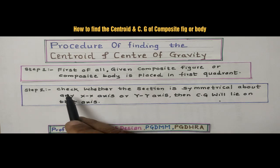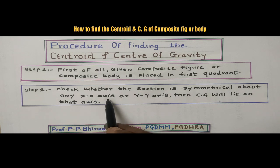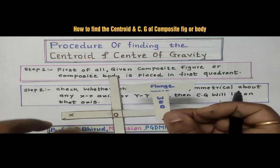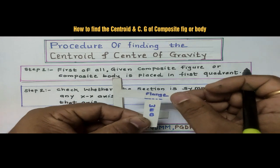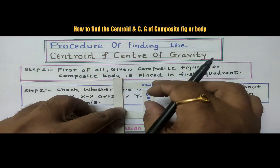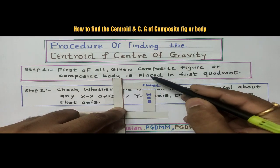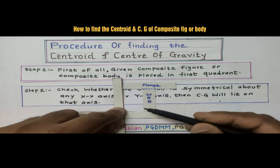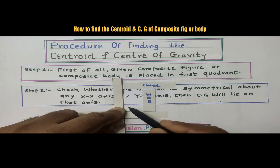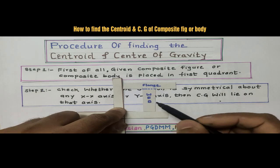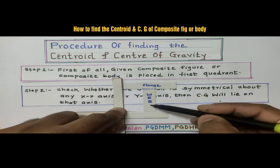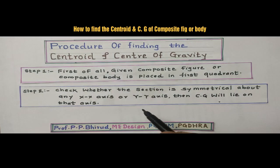Now, second step: check whether the section is symmetrical about any x-axis or y-axis — then the CG will lie on that axis. So, if you take a T-section and place it in the first quadrant, we can see this T-section is symmetrical about the y-axis. So, we will get x-bar directly; there is no need to calculate x-bar.